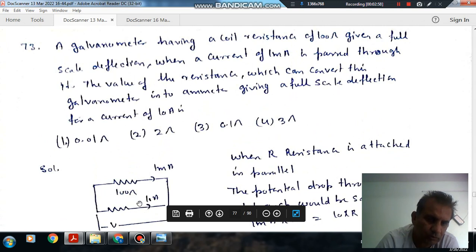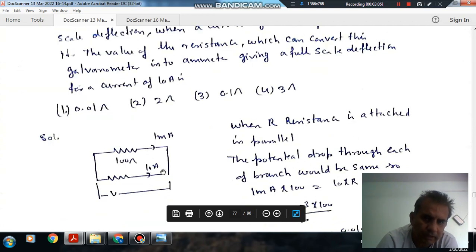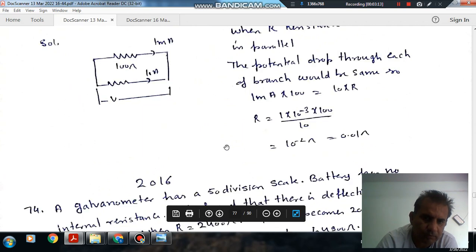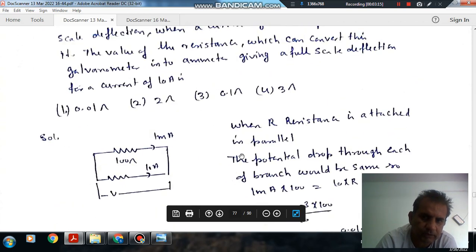The total current is 10 milliampere. The voltage drop across the galvanometer and shunt resistance must be equal. So 1 milliampere × 100 ohm = (10 - 1) milliampere × R. Therefore, R = 100/9, which equals approximately 11.1 ohm.